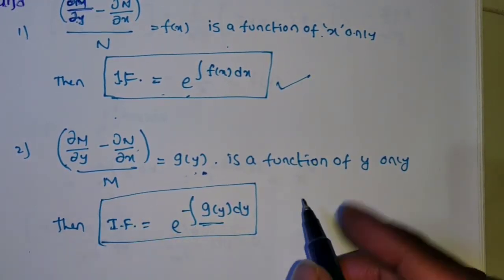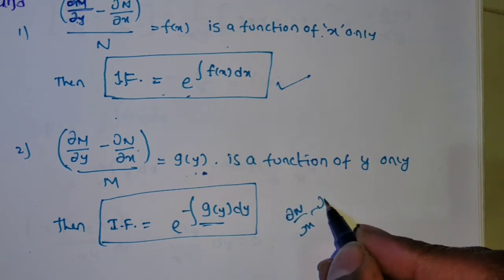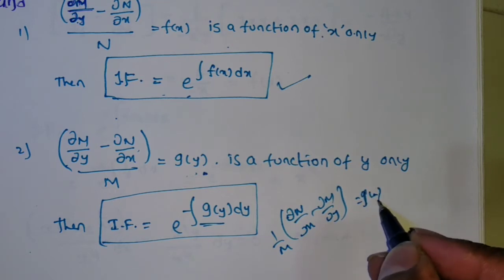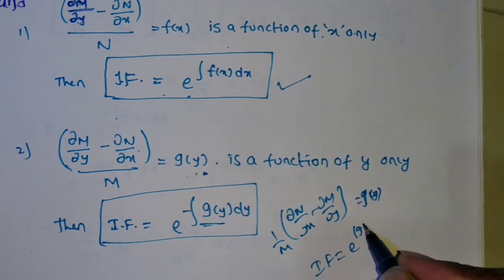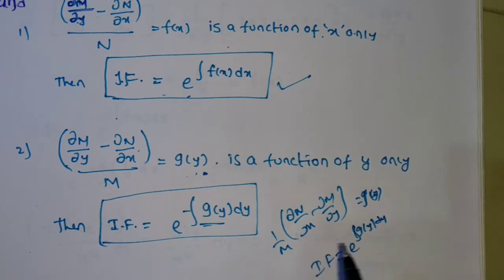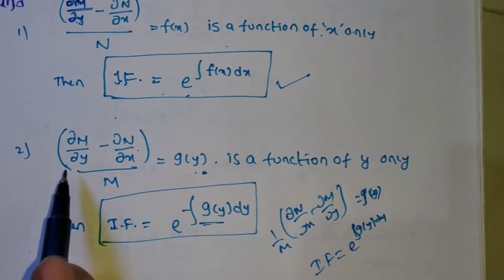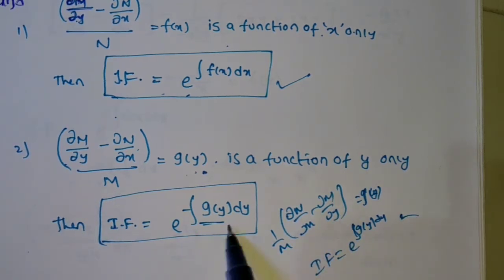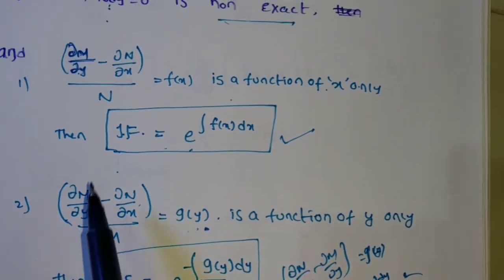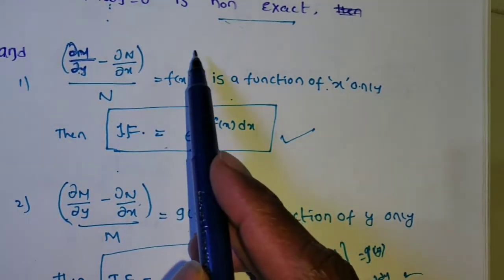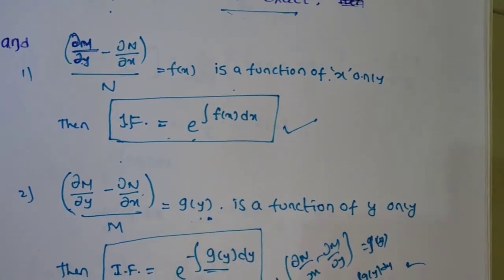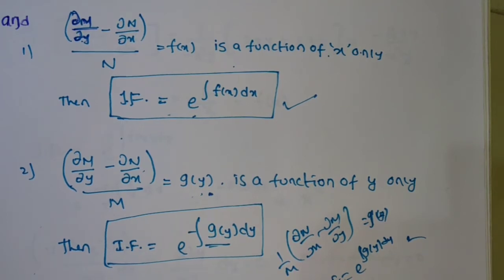Some authors write ∂N/∂x minus ∂M/∂y divided by M to get g(y), and the integrating factor is e to the power of integral g(y) dy. Both are equivalent — the sign difference cancels out. I prefer the common formula: divide ∂M/∂y minus ∂N/∂x by N for f(x), or by M for g(y), for easier understanding.